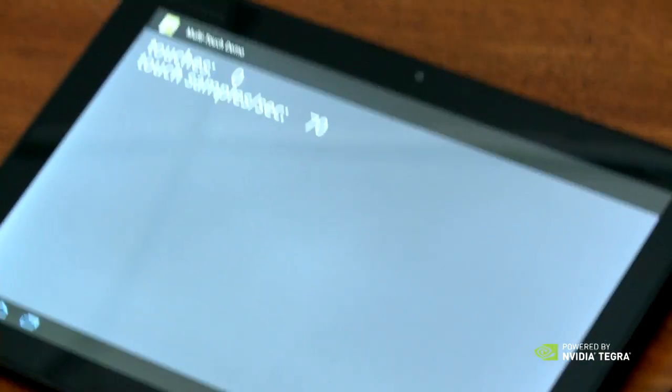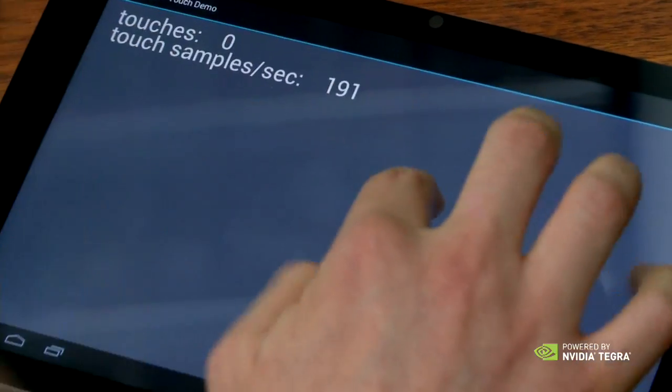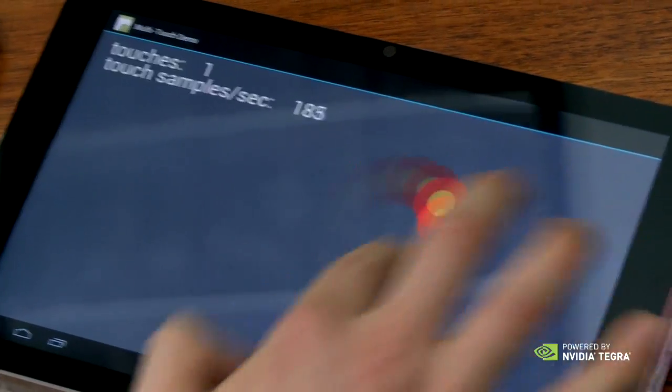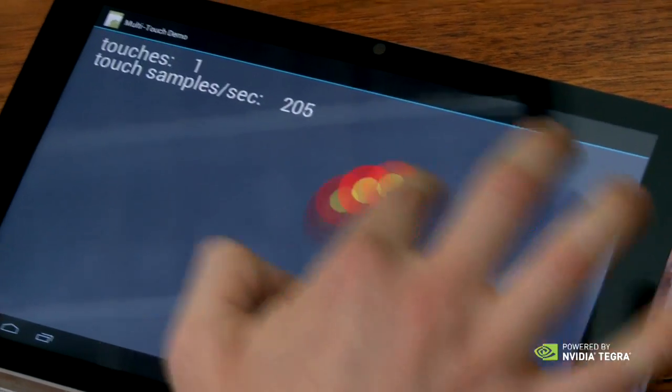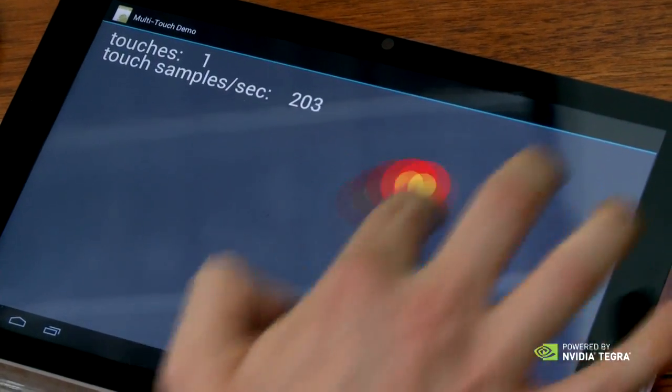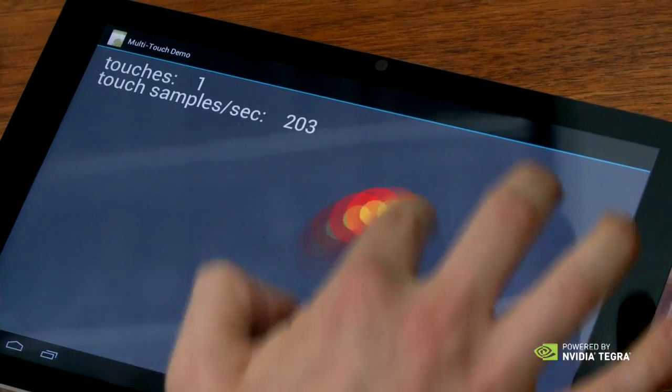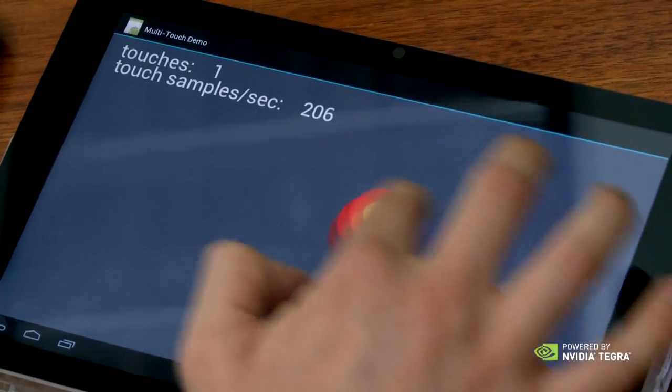So now let me show you what DirectTouch looks like. I'm going to move over here to Tegra 3 and start again with one finger. What you can see with one finger is about 200 samples per second. This is DirectTouch at work. So we're already about 2x, and it'll end up being about 3x as we increase the number of fingers.